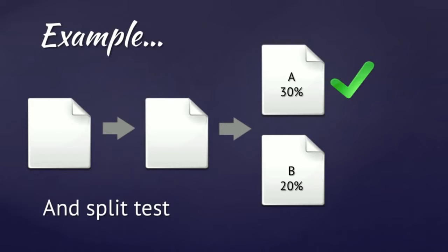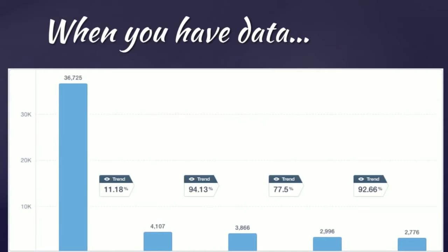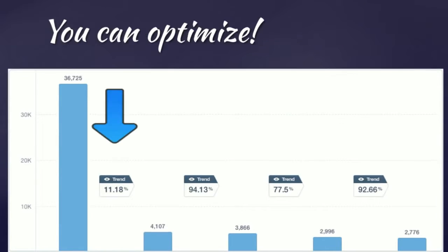We also need to be able to split test. For example, if we have a blue buy button on our checkout page and we want to know if a red button would get more people to convert, we need the tools in place to test that. When you have the data, it's obvious where a weak point in the funnel is — between step one and step two, nearly 90% of people don't continue past step one. When you have the data, you can optimize, and by optimize I mean split test.